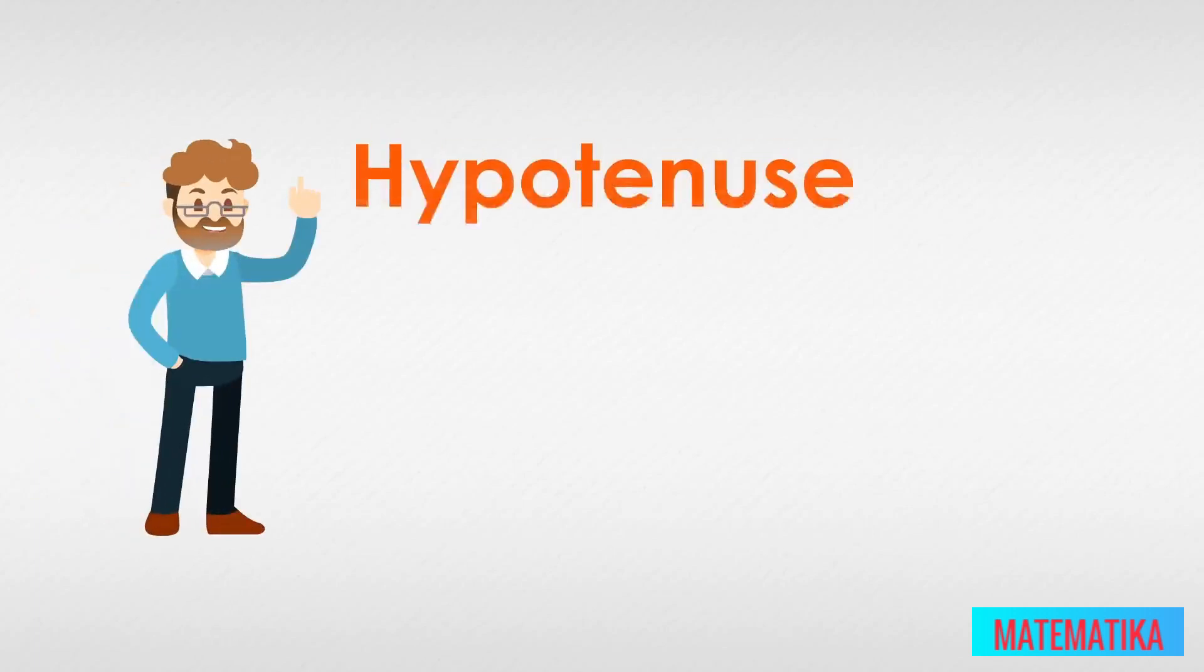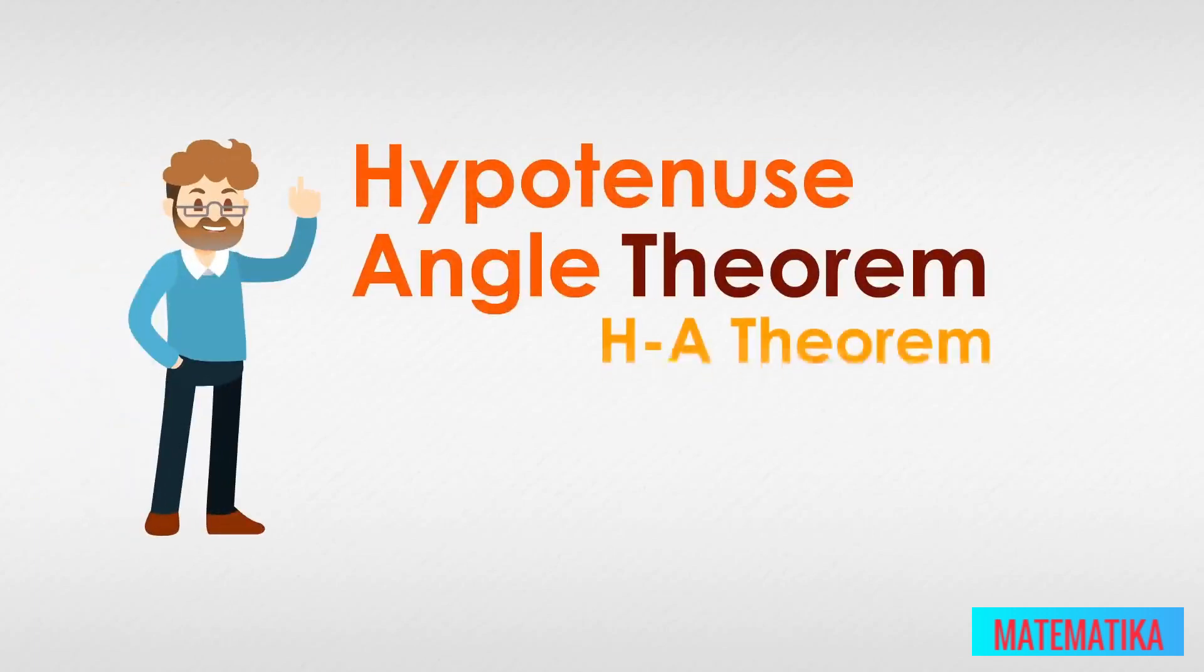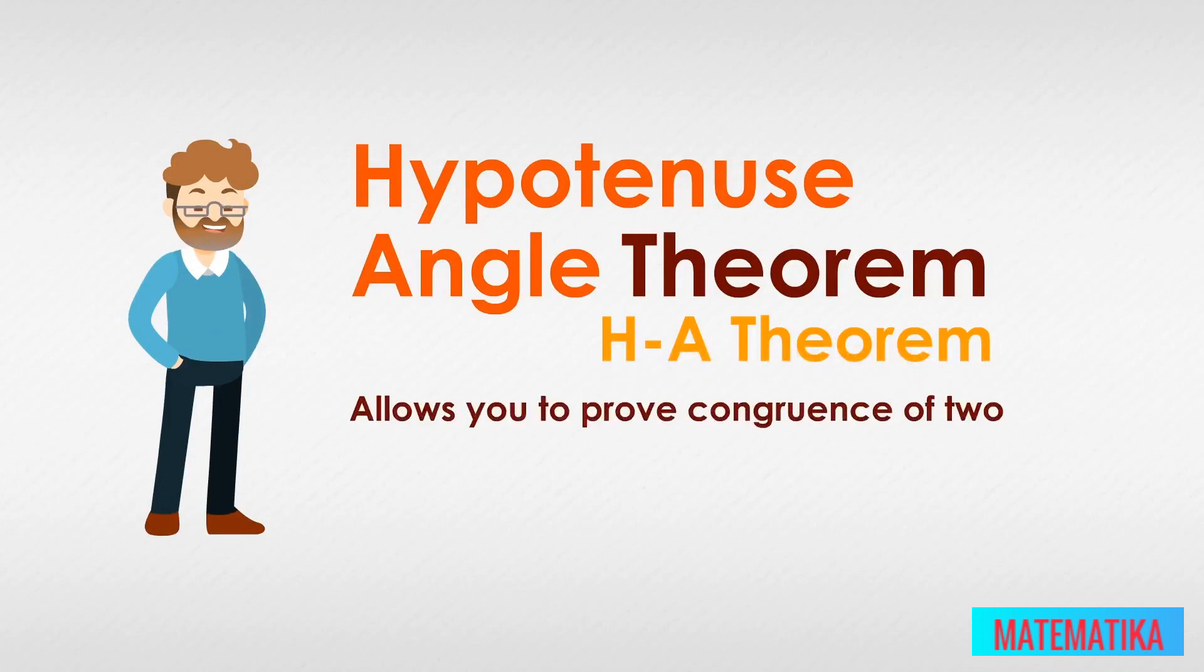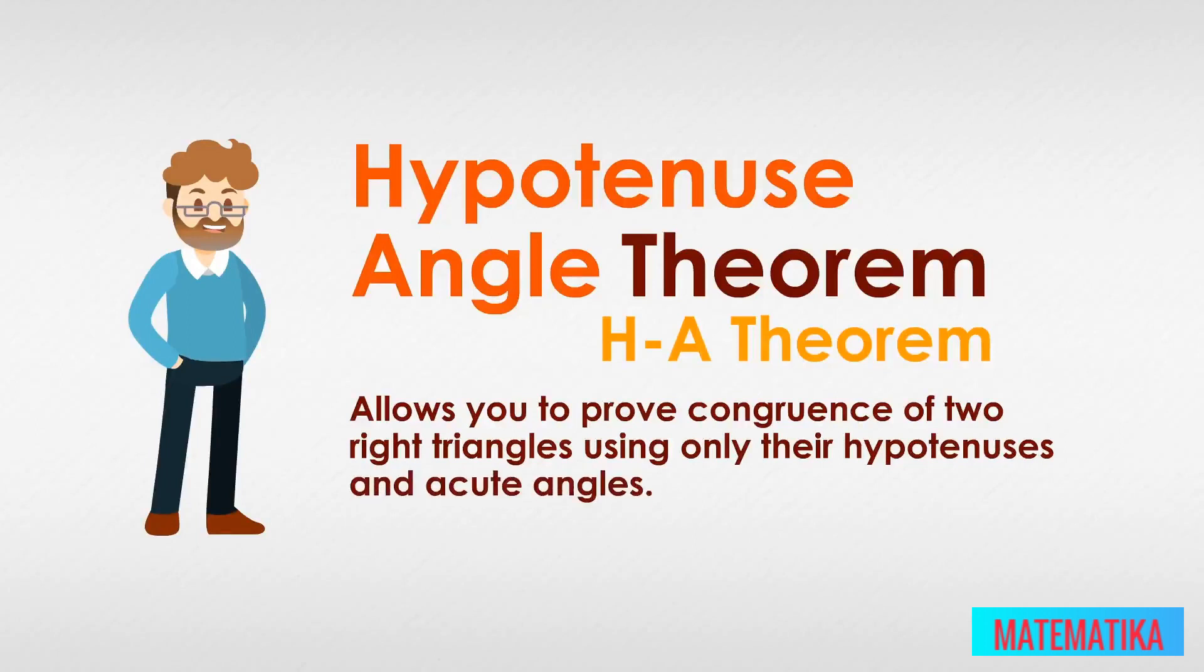This lesson is all about the Hypotenuse Angle Theorem, or HA Theorem, which allows you to prove congruence of two right triangles using only their hypotenuses and acute angles.